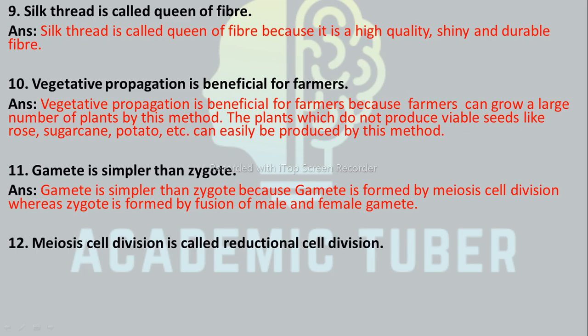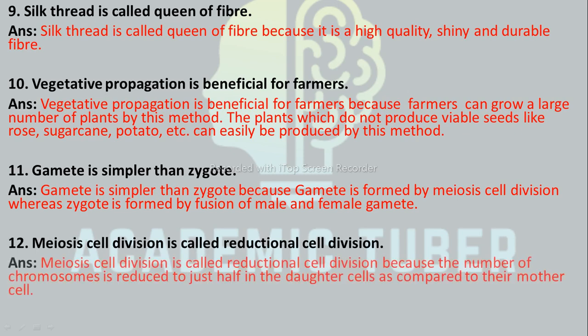Meiosis cell division is called reduction cell division. Why? Meiosis cell division is called reduction cell division because the number of chromosomes is reduced to just half in the daughter cells as compared to their mother cells.